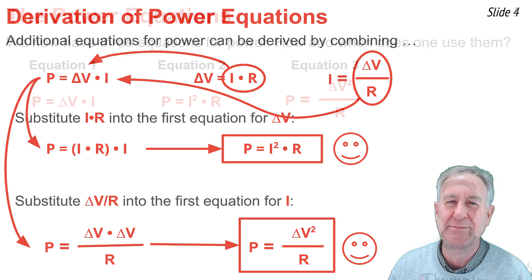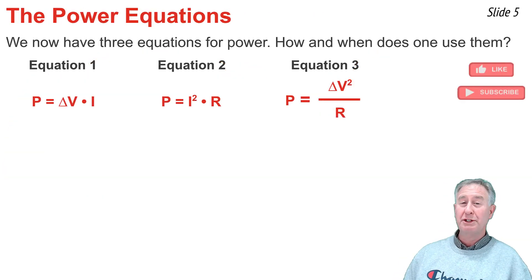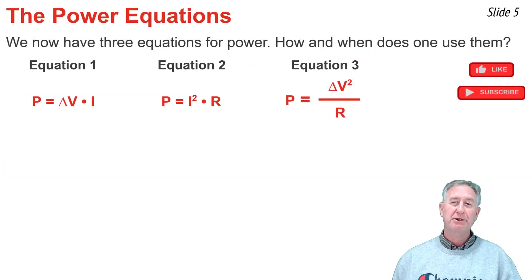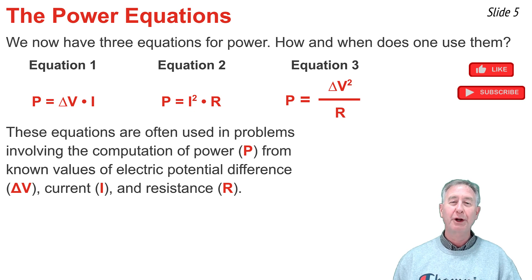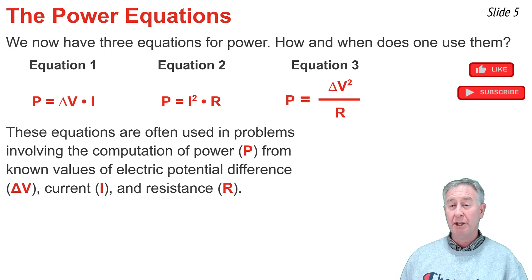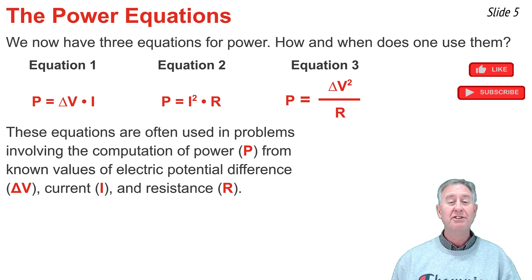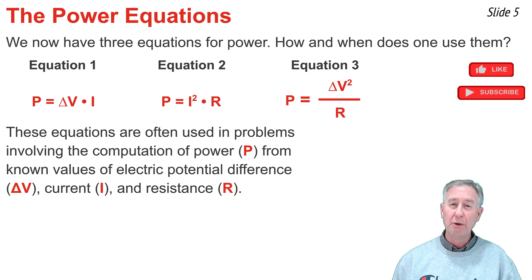Here are our three equations for electric power, numbered for discussion purposes. A common physics word problem will ask you to solve for electric power from given values of delta V, I, or R. The big question is which one of these three equations should we use? The answer is it depends on what's given in the physics word problem.